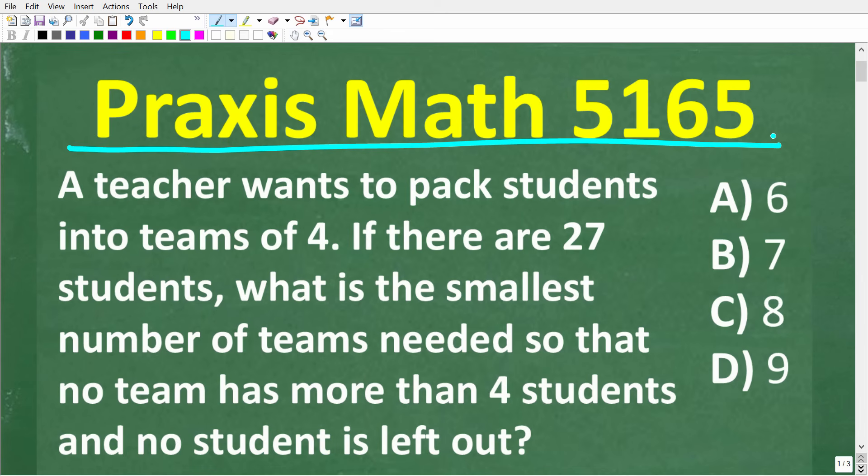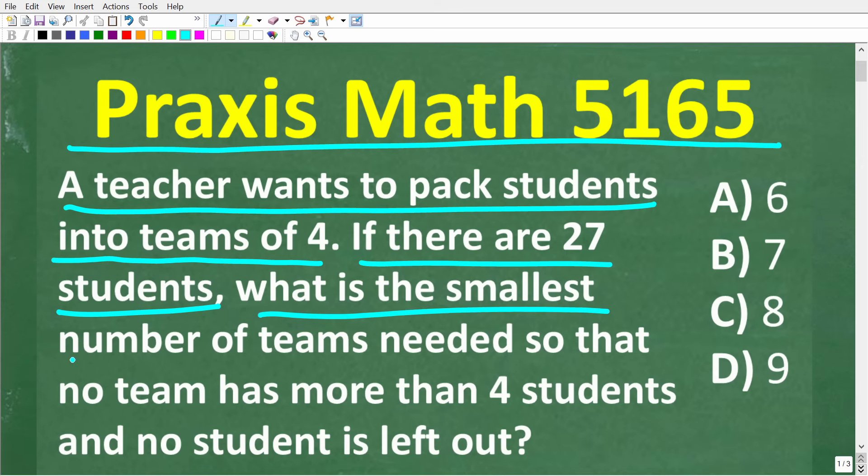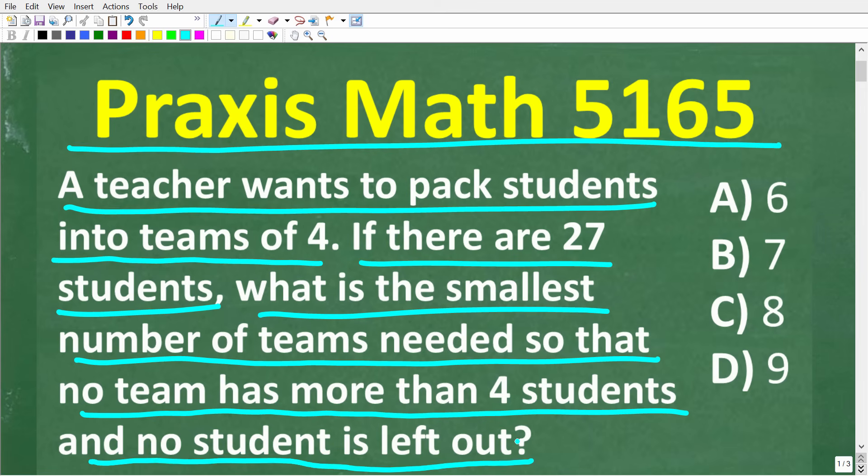So let's take a look at the problem. A teacher wants to pack students into teams of four. If there are 27 students, what is the smallest number of teams needed so that no team has more than four students and no student is left out? Now we do have a multiple choice question here. A is 6, B is 7, C is 8, and D is 9.